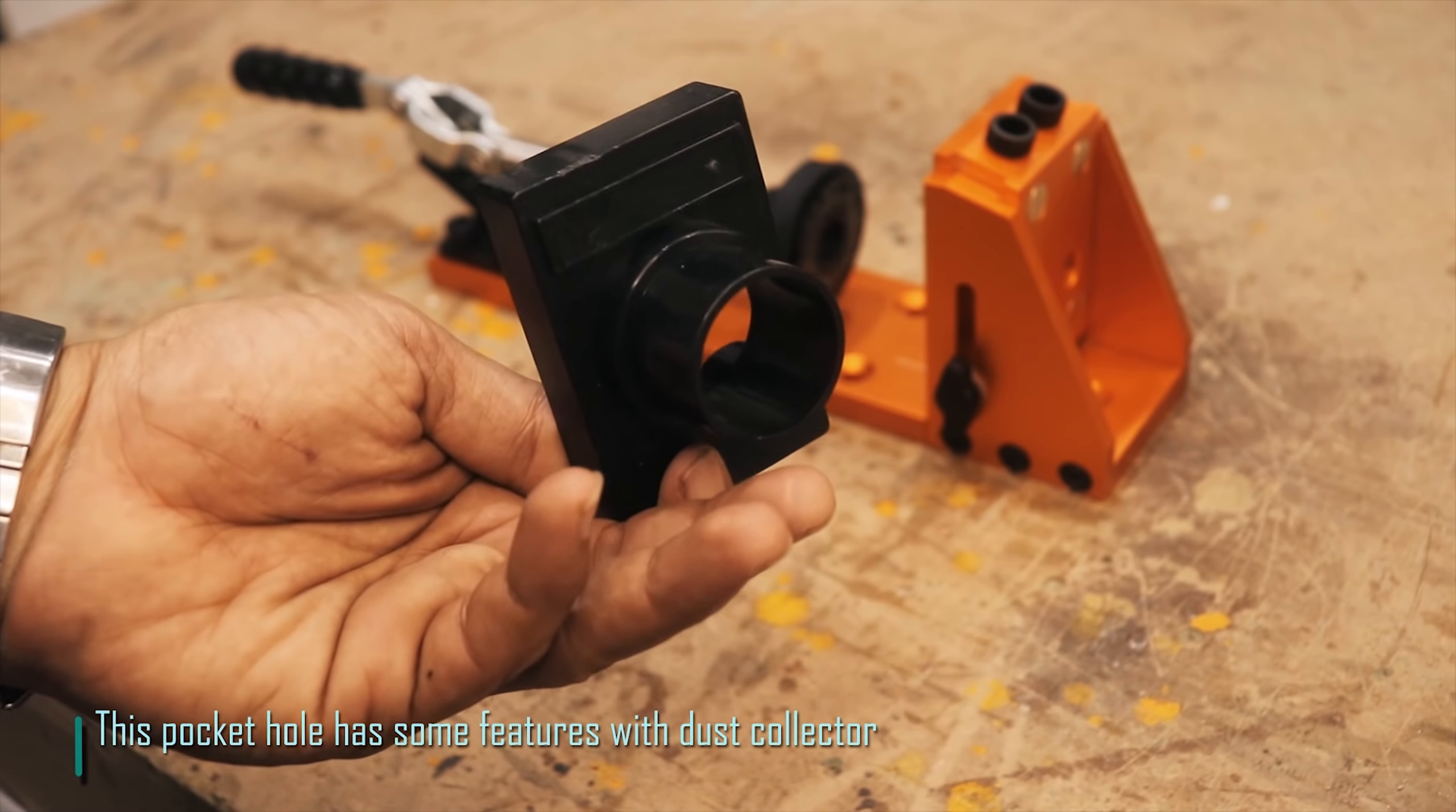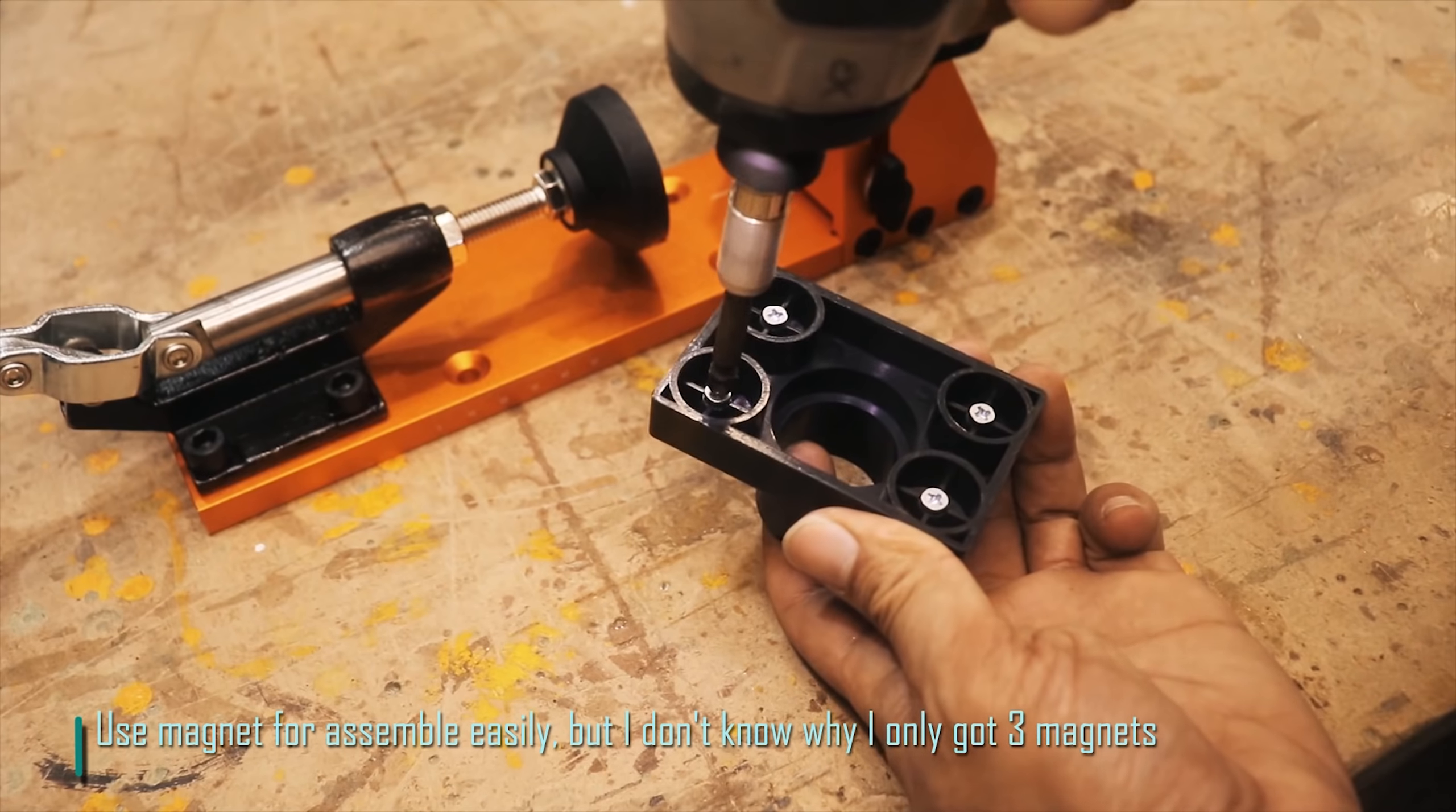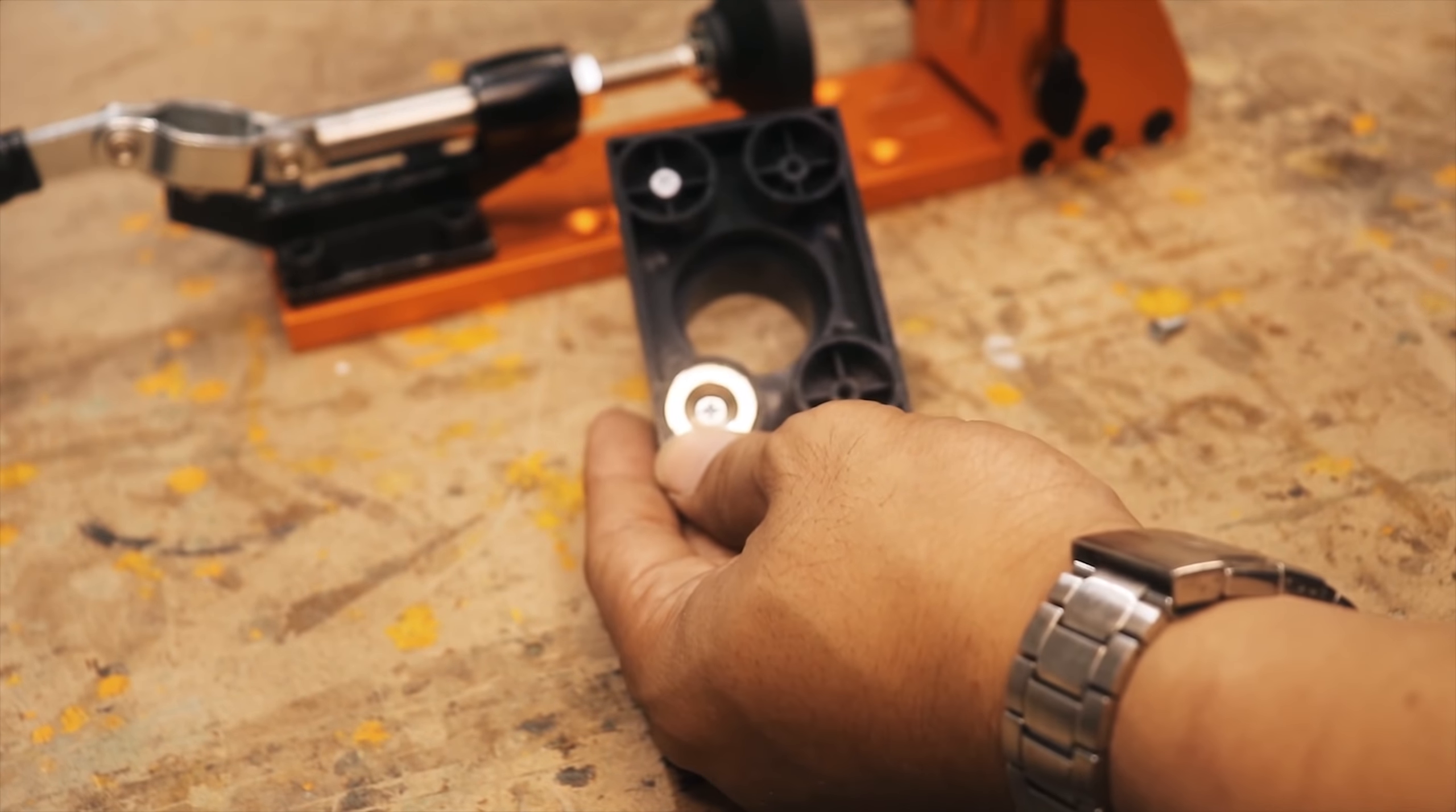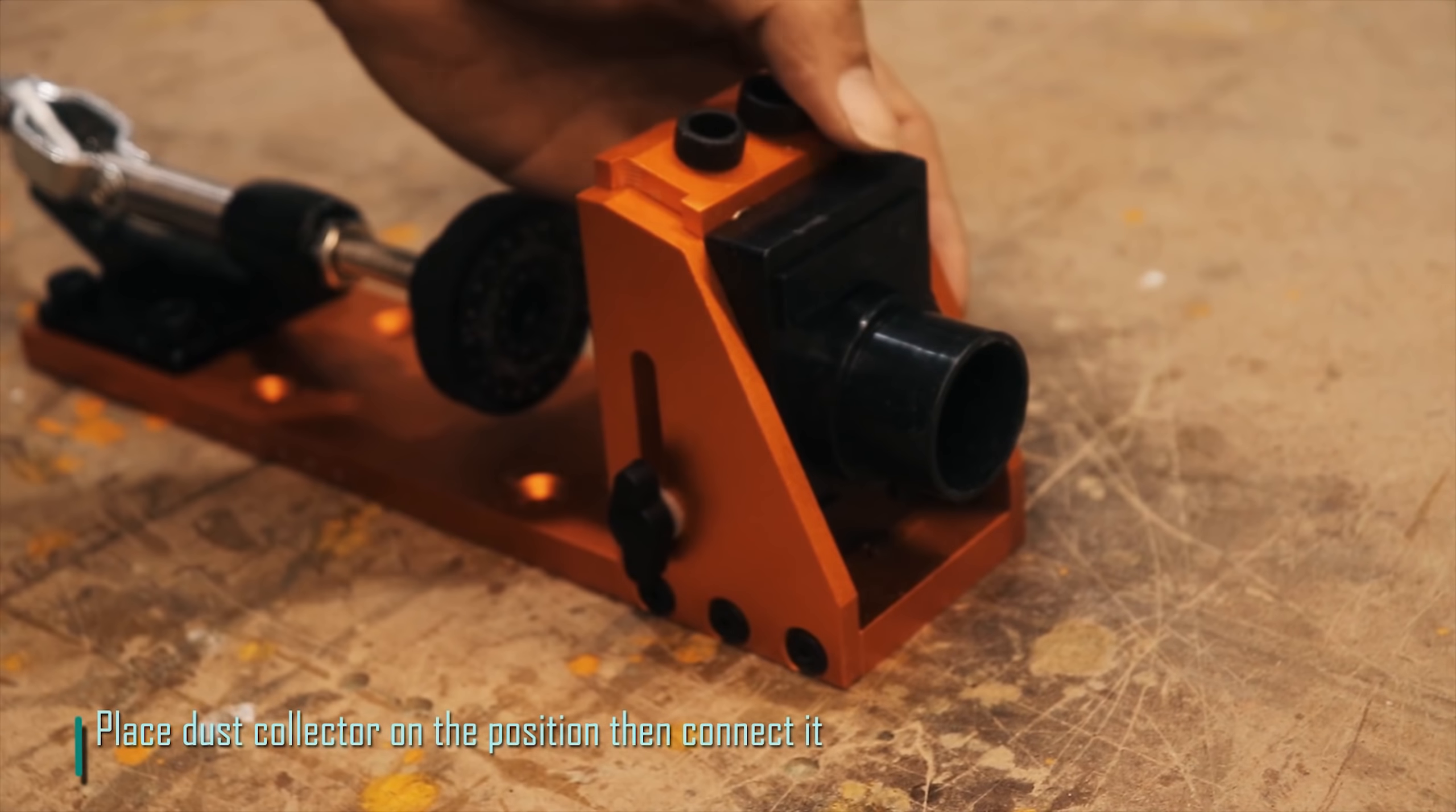This pocket hole has some features with dust collector. It uses magnets to assemble easily, but I don't know why I only got three magnets. Place the dust collector on the position then connect it.